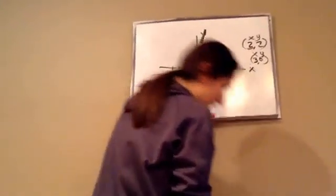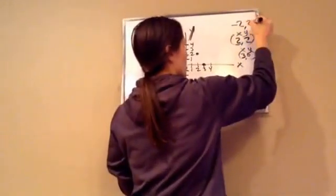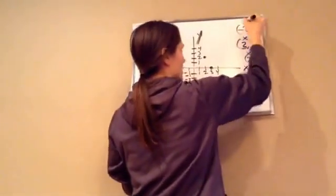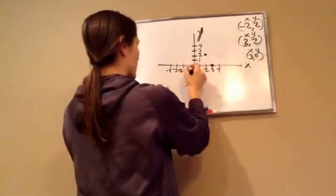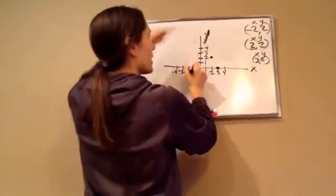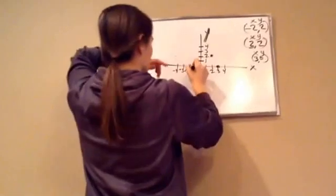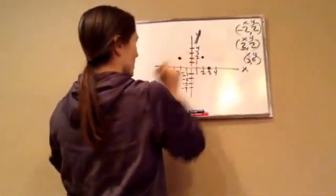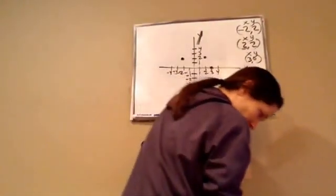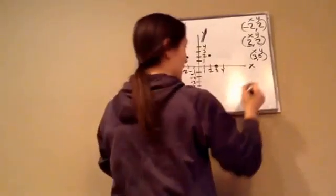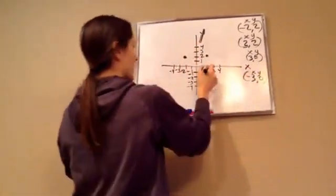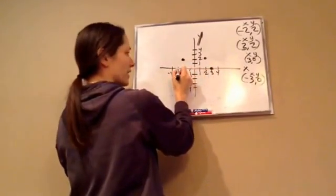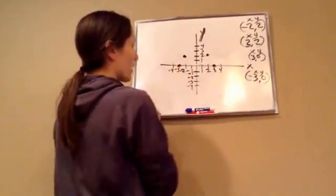The next one is negative 2, 2. So this is my X and this is my Y. Negative 2 on my X axis would be 1, 2, and I'm going to hold it there. And then Y is positive 2, so I'm going to go 1, 2 and put a dot there. Alright, and then the last dot is negative 3, 0. And that's my X and that's my Y. Now X is negative 3 right here, and then Y is zero so I don't go up and down.